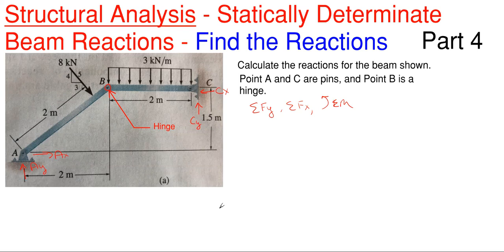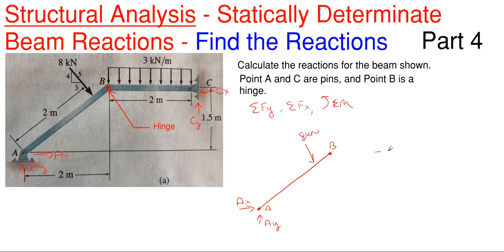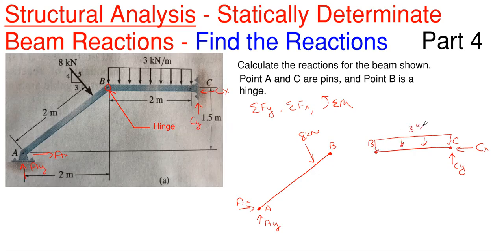What we can do is split this thing into two portions right at the hinge, so we would have our left portion from A to B with reactions A sub Y and A sub X, plus the eight kilonewton force coming in at an angle. Then the second portion from B to C, with reactions C sub Y assumed upward and C sub X assumed to the left, and the three kilonewtons per meter load. When you have a hinge, you split it into two sections and treat the hinge just like a pin reaction at that point.